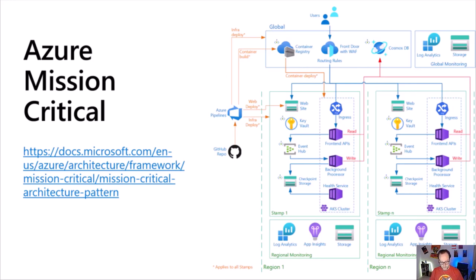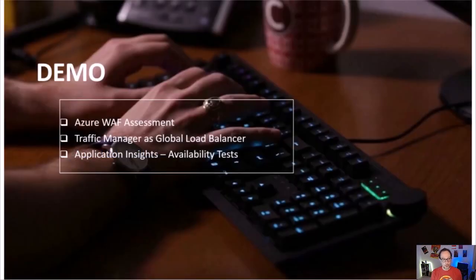It's about time to switch to another demo where I'll walk you through key characteristics of the Well-Architected Framework, how to run an assessment and what the outcome could look like, showing Traffic Manager capabilities as one of the global load balancing scenarios, and focusing on one specific Application Insights feature — availability tests — showing what they can help you with from a reliability perspective.